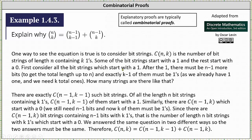First, consider all the bit strings which start with a one. After the one, there must be N minus one more bits to get a total length of N and exactly K minus one of them must be ones as we already have one one and we need a total of K ones. How many strings are like that?